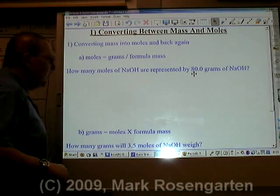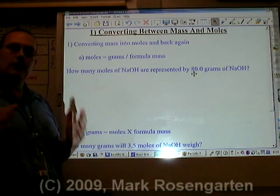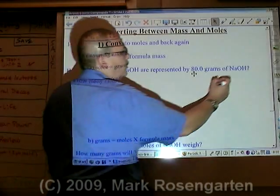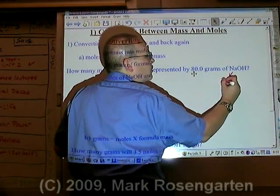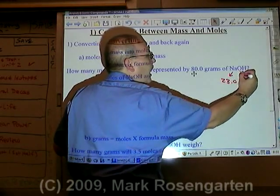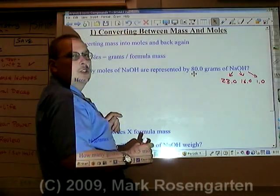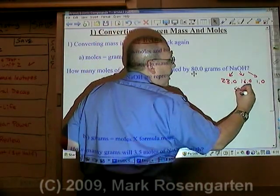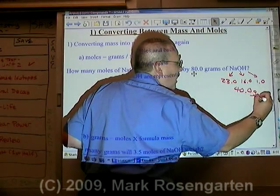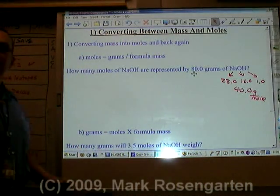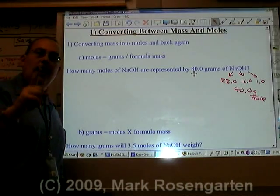First of all, the formula mass tells you how many grams one mole of a substance will weigh. For example, according to the periodic table, sodium is 23.0, oxygen is 16.0, and hydrogen is 1.0, for a total combined formula mass of 40.0 grams per mole. Now that's how many grams one mole weighs.